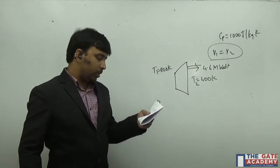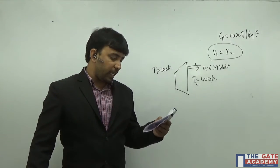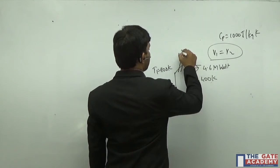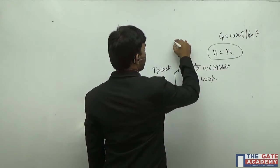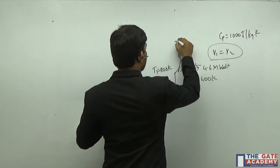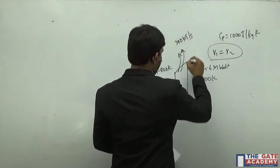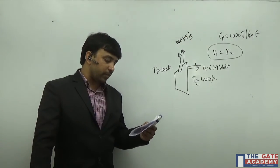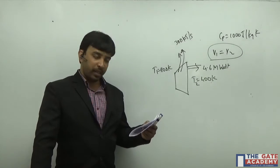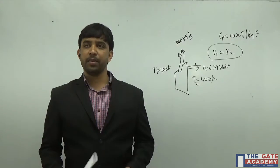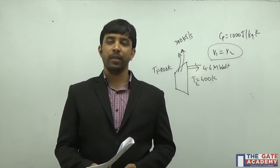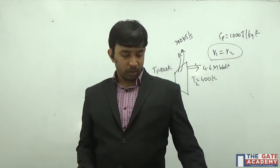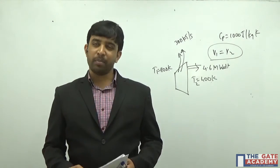Heat escapes from the turbine casing at a rate of 300 kilojoules per second. We are asked to find the mass flow rate of the gas in kg per second through the turbine to produce this power.